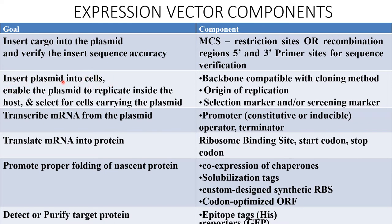Next is to insert the plasmid into a host cell and enable the plasmid to replicate inside the host, where multiplication of the plasmid takes place. To insert the plasmid into the host cell, transformation processes such as Agrobacterium-mediated transformation, electroporation, or gene gun method are used. To enable replication inside the host, the origin of replication is utilized. To select cells carrying the plasmid, selection markers or screening markers are used.